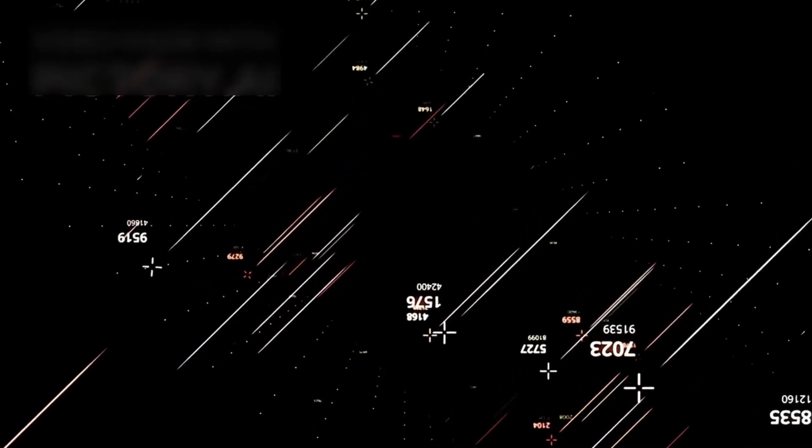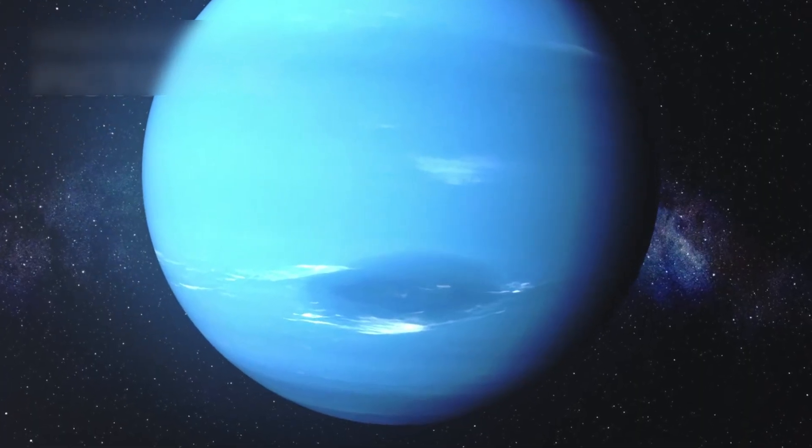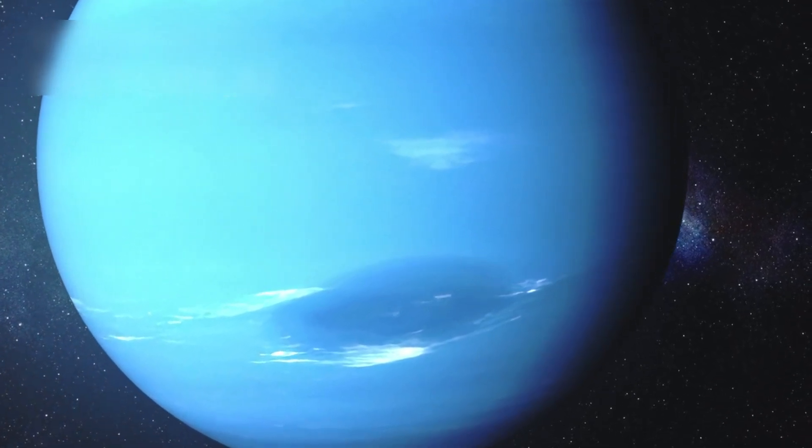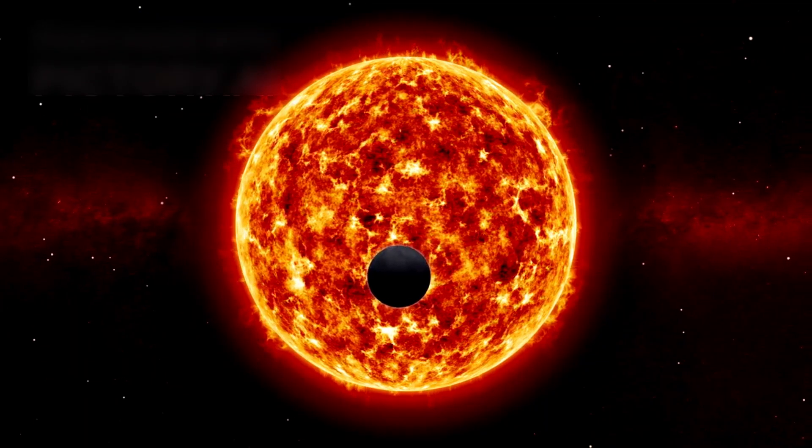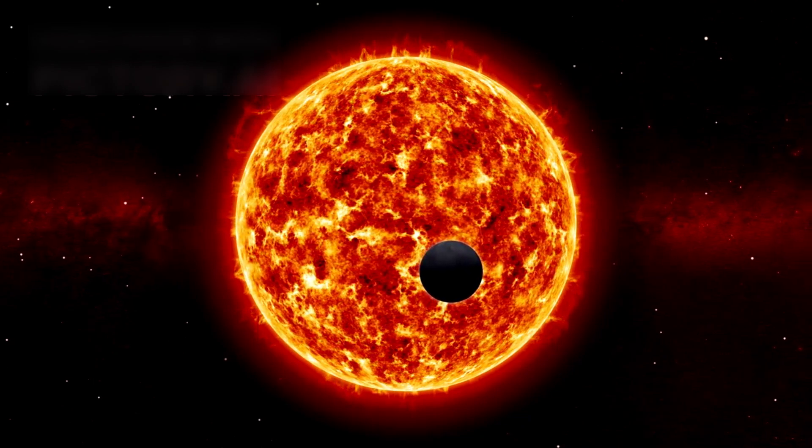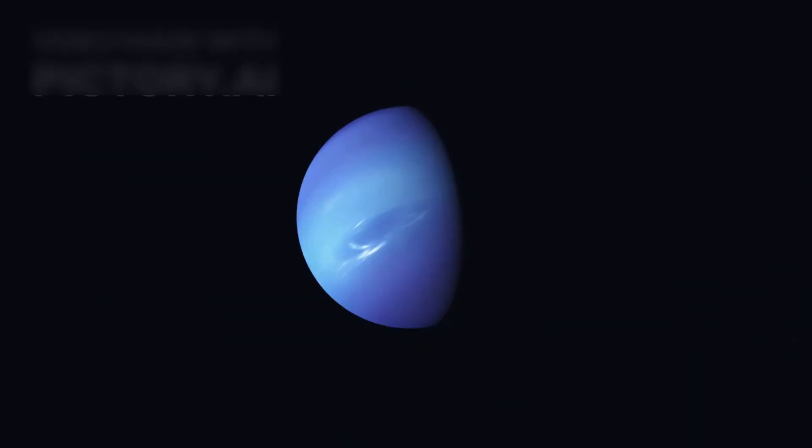Rewriting planetary science. Why does any of this matter? Because Neptune, this seemingly distant icy sphere, is not just another planet in the solar system. It is a template, a cosmic benchmark. Across the galaxy, astronomers have identified thousands of exoplanets that fall into a similar size category.